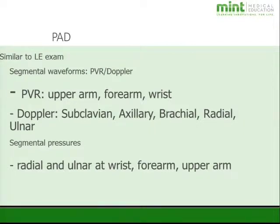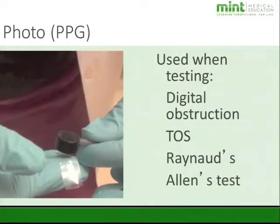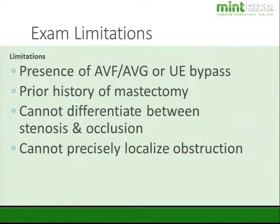For further assessment, we use PPGs to test for digital obstruction, thoracic outlet, Raynaud's, and the Allen's test. There are a few limitations: as with the lower extremities, if the patient has a bypass or AV fistula, we do not want to put a cuff over that. Generally in patients with mastectomy, their physician will advise against obtaining blood pressure in that arm to avoid lymphedema, so we skip it.